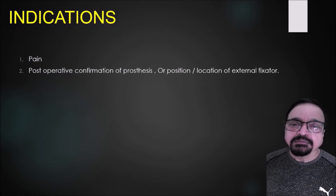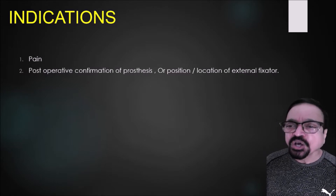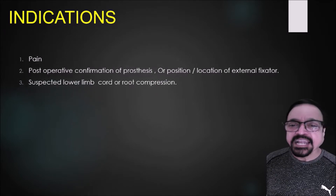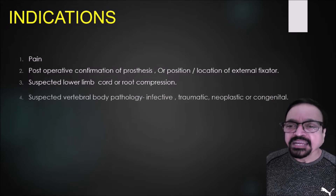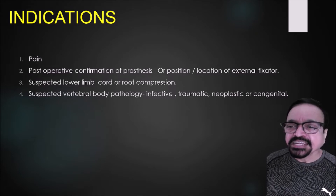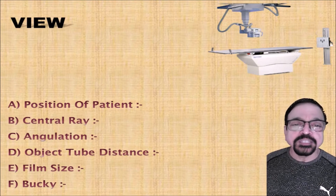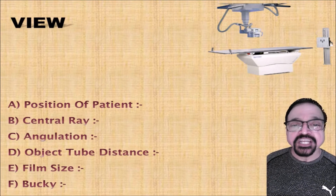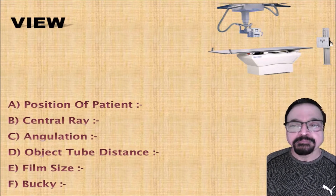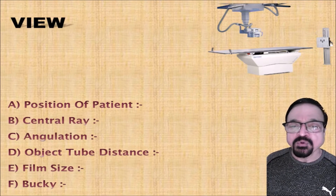The indications are pain — that is back pain — then post-operative confirmation of prosthesis, position or location of external fixators, then suspected lower limb cord or root compression. Then suspected vertebral body pathology, either infective, traumatic, neoplastic, congenital, or otherwise. A technician should know this beforehand because he is going to position the patient, ensure patient comfort, and avoid unnecessary pain-precipitating factors before taking the patient into the radiography room.